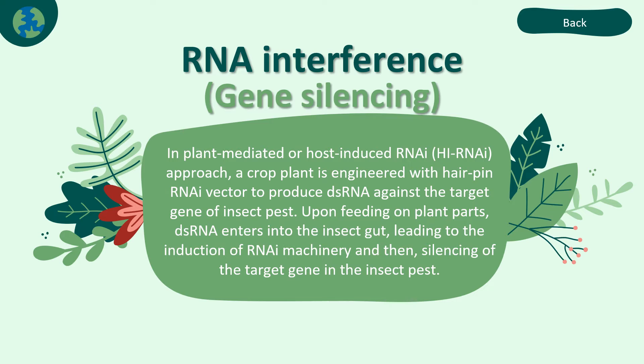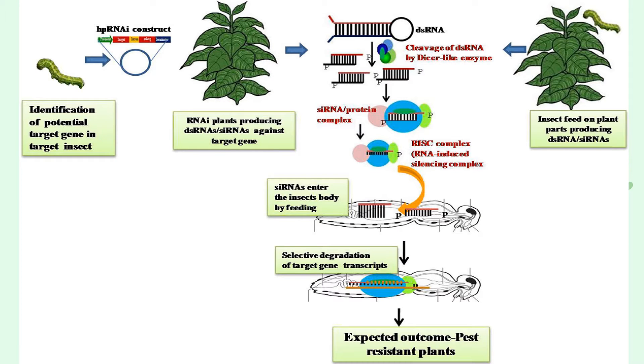Do you know how ribonucleic acid interference silences the target gene in the insect pest? In the plant-mediated or host-induced RNAi approach, a crop plant is engineered with a hairpin RNAi vector to produce double-stranded RNA against the target gene of insect pests. Upon feeding on plant buds, double-stranded RNA enters the insect gut, leading to the induction of RNAi machinery and then silencing of the target gene in the insect pest.